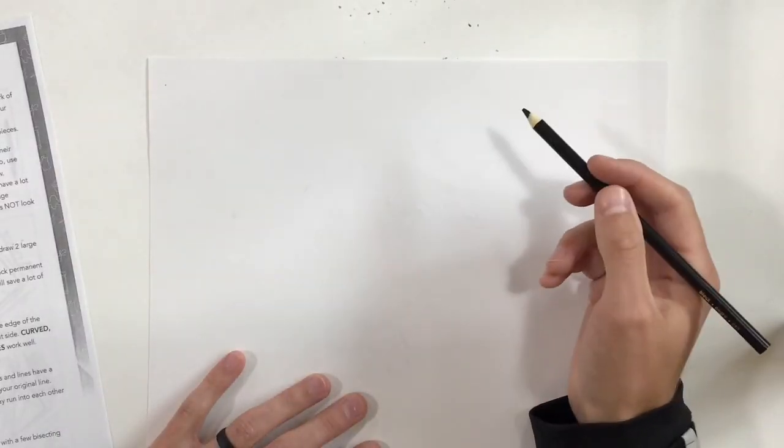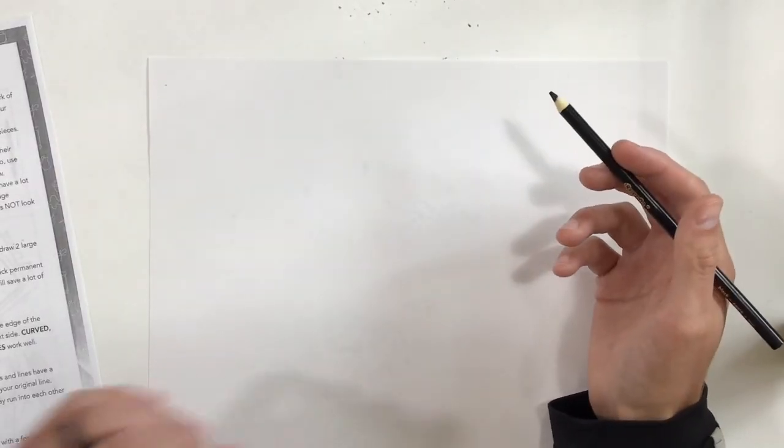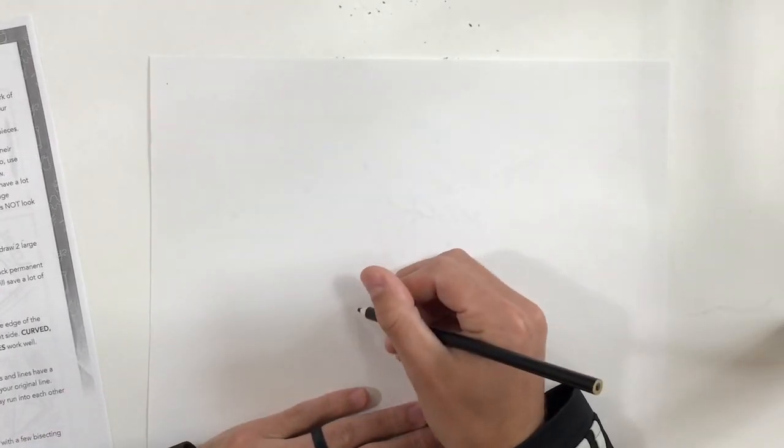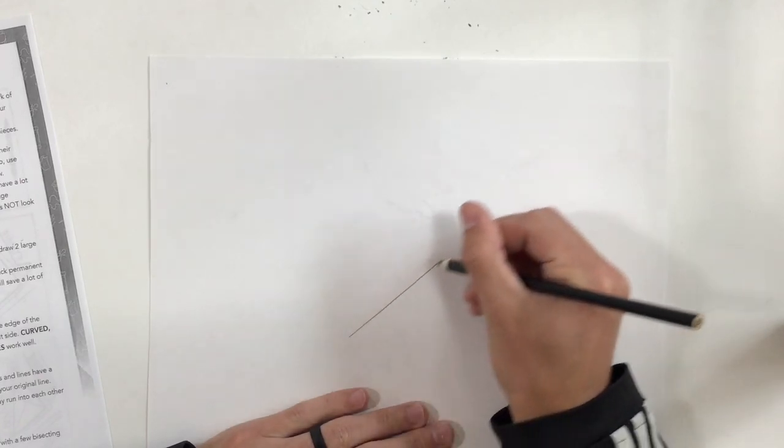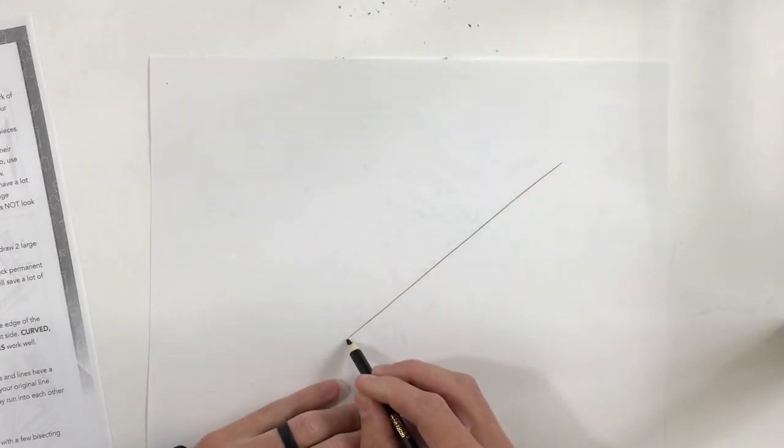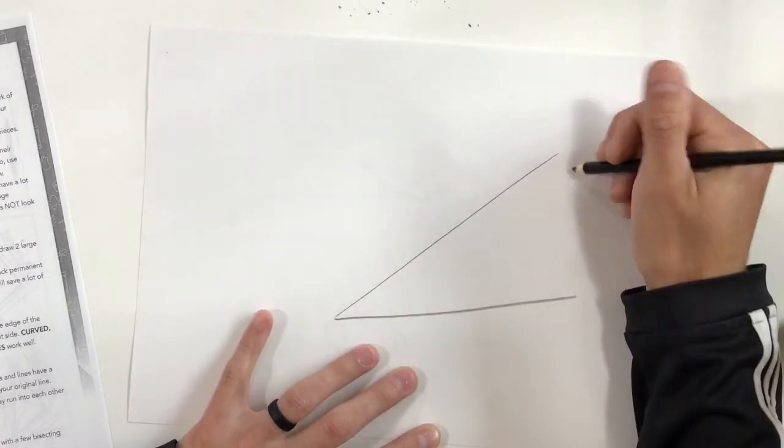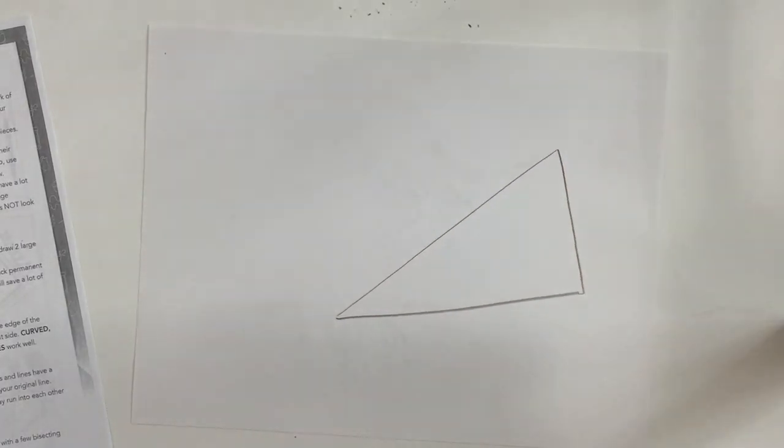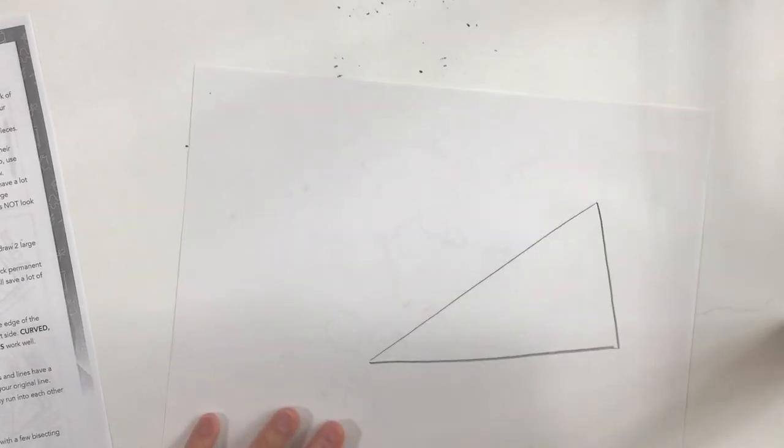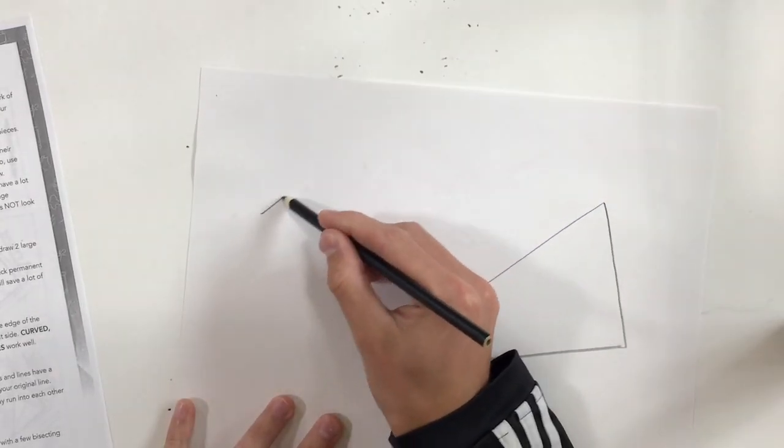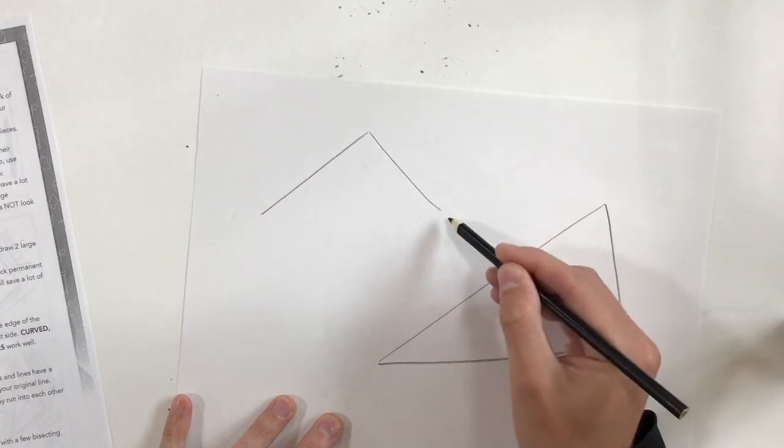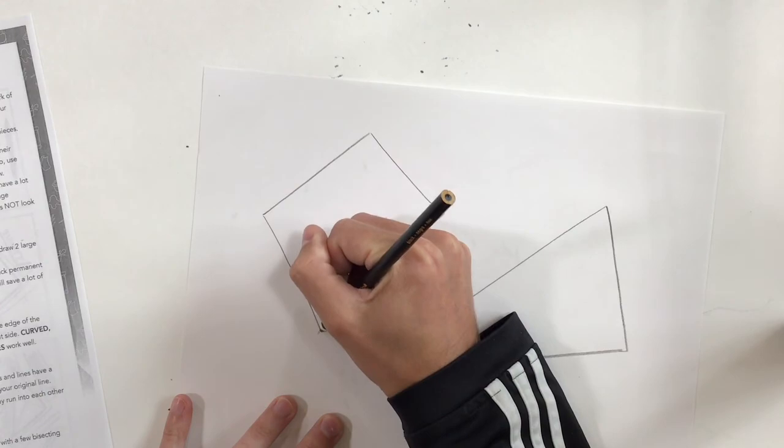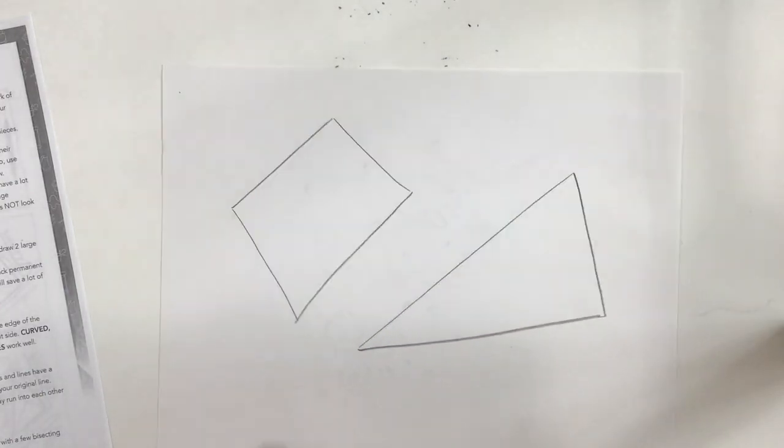You don't have to use those shapes, but I would recommend using them because those straight lines I think are going to help you out on your design. So maybe I'll do something like this, I'm going to do a triangle and I'm going to do like a diamond shape. So I got my two shapes.